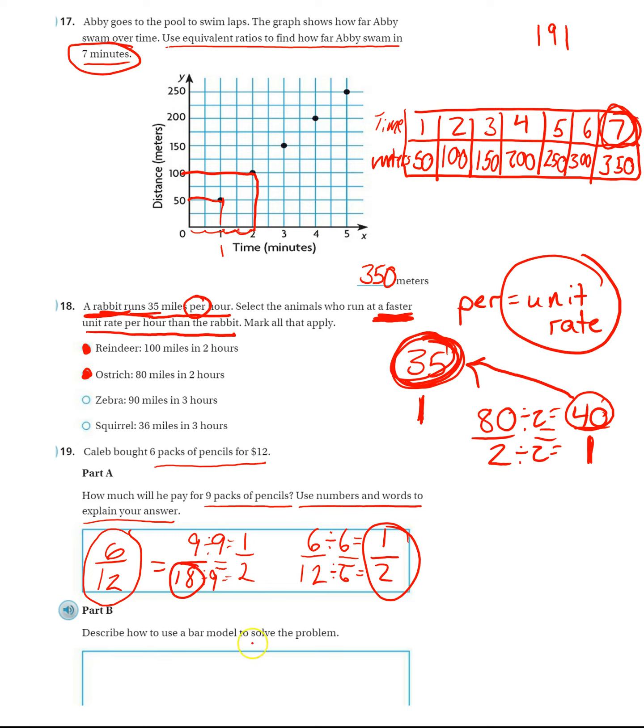Okay, describe how to use a bar model. So to make a bar model, we have six things, one, two. These represent our packs. And all of these packs cost $12. So in order to find out how much nine packs would be, three, four, five, six, seven, eight, nine. So we need to figure out how much nine of these will cost.